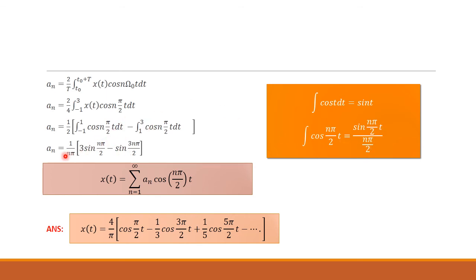After applying the limits, aₙ = (1/nπ) [3 sin(nπ/2) − sin(3nπ/2)]. Now writing the general trigonometric Fourier series, since a₀ = 0 and bₙ = 0, we have: x(t) = summation from n=1 to infinity of aₙ cos(nπ/2 · t). Substituting the aₙ value: x(t) = (4/π)[cos(π/2 · t) − (1/3)cos(3π/2 · t) + (1/5)cos(5π/2 · t) + ...].